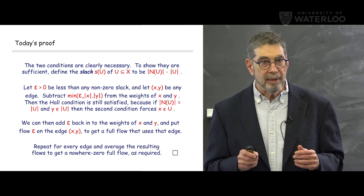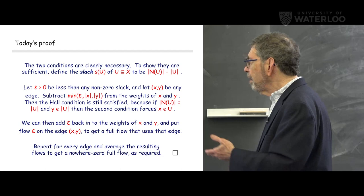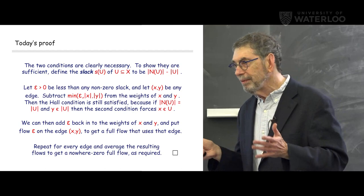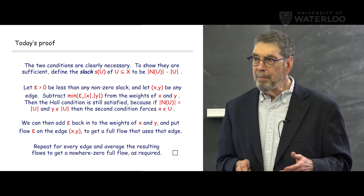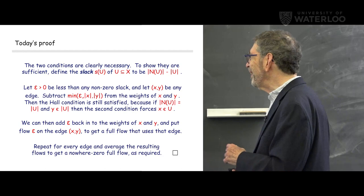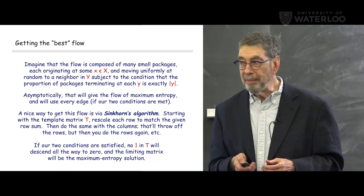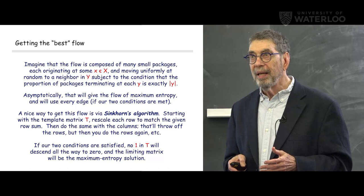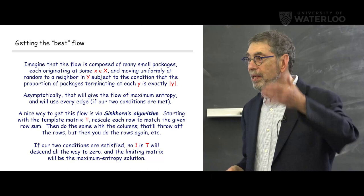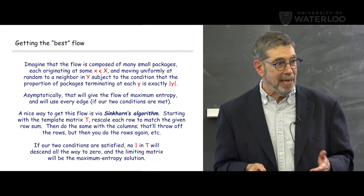This theorem is presumably in the literature somewhere — if you know where, I'd love references. A remark: if all vertex weights are equal, the problem reduces to Hall's theorem, needing every edge to be part of a matching. There is also Sinkhorn's algorithm: given a matrix you want to be doubly stochastic, alternately rescale rows to sum to one, then columns to sum to one, and repeat. This converges rapidly to a doubly stochastic matrix. But what Sinkhorn's algorithm doesn't tell you is which entries will be zeroed out — and that is what our condition tells you.